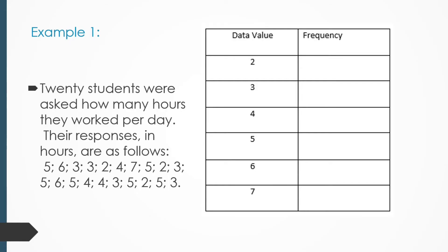Example 1: we want to construct a frequency table. 20 students were asked how many hours they work per day. Their responses in hours are as follows. Some people said they work two hours, three hours, four hours, five hours, six hours, and seven hours. These are the only responses and we have inserted them into our data table.